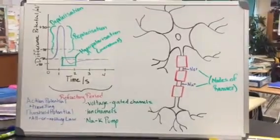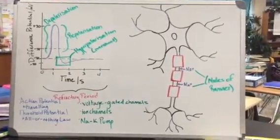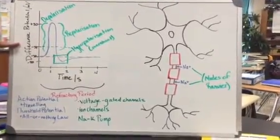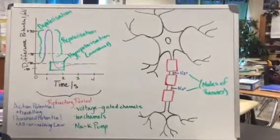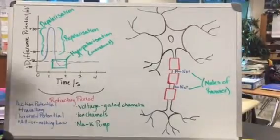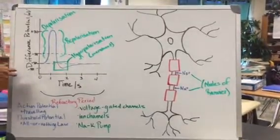If we look at this graph, this shows the action potential, and negative 50 millivolts is the threshold potential for these signals. If the sodium ions cause the difference between the inside and the outside to be negative 50 millivolts, it will cause depolarization to occur,